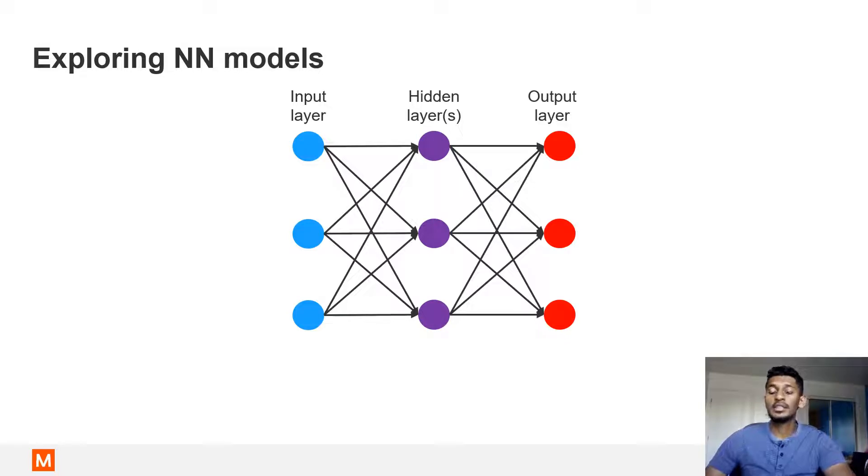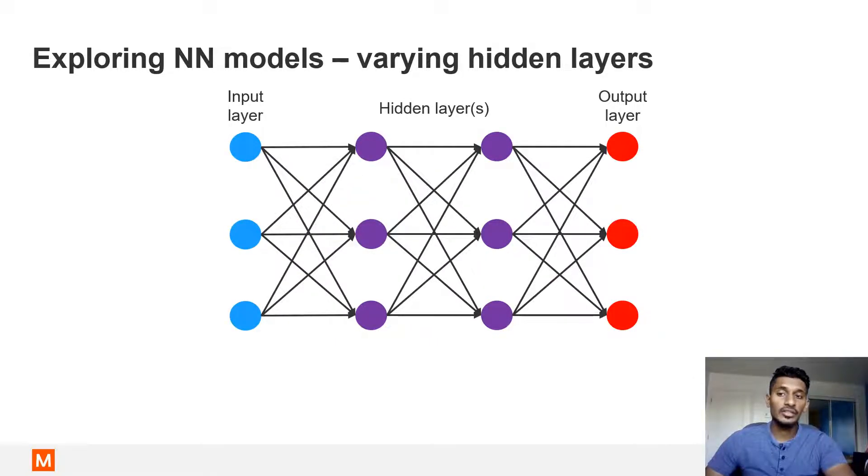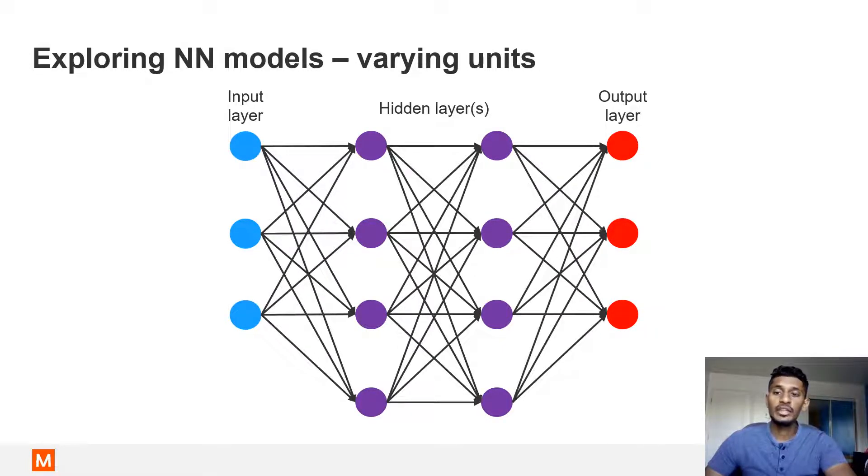Taking a typical neural network layout, the input layer is shown in blue, the hidden layer in purple, and the output layer in red. We vary the number of hidden layers of the neural network by adding more layers, as shown here. We also vary the number of units in the hidden layers by adding more units, as shown here.